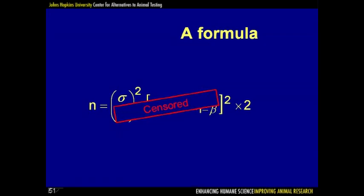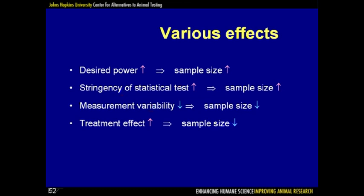It is best to focus on the major concepts rather than specific formulas. If you desire greater power, you will need a larger sample size. If you wish to use a more stringent statistical test — for example, controlling the rate of false positives at 1% rather than 5% — you will also need a larger sample size. On the other hand, if you are able to decrease measurement variability, you could get by with a smaller sample size. And if you can increase the treatment effect — perhaps by using a greater concentration of salt — you can also get by with a smaller sample size.